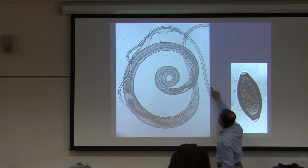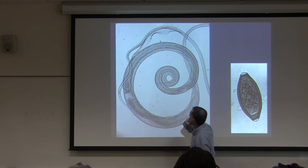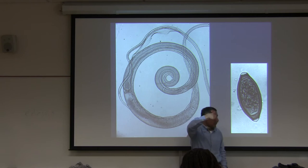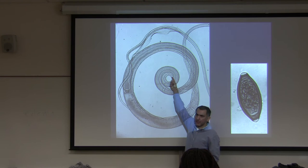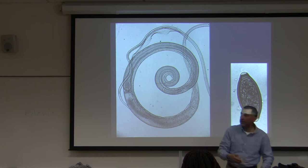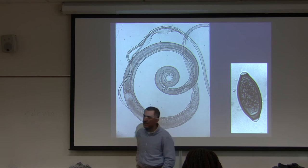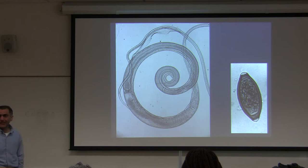This is the whipworm: notice the thick anterior portion, then a long, narrow posterior end. The Russian scientist who first discovered it assumed the thick end had the mouth, but further research revealed the mouth is actually on the thin end and the anus is on the thicker end — hence the name 'whipworm' when you flip it around.